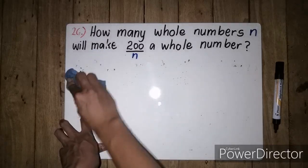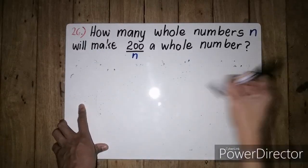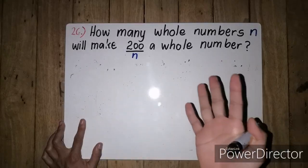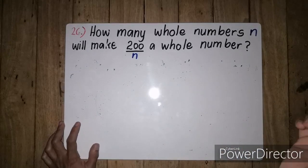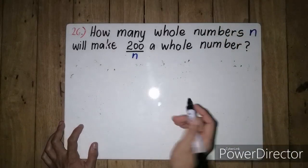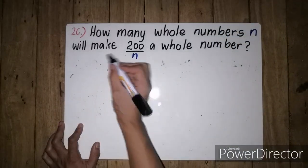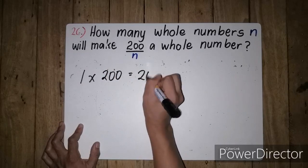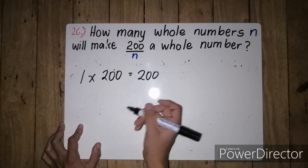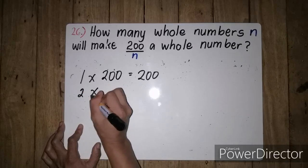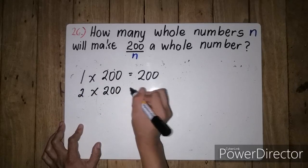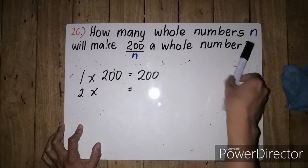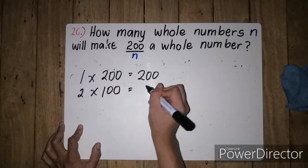Yung unang number ay 1. Kahit anong naman number, meron siyang factor na 1. So let us have 1 times 200 is equal to 200, followed by 2. 2 times 100 is equal to 200.